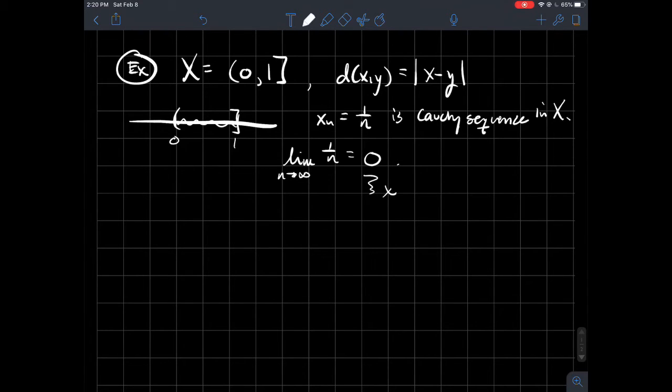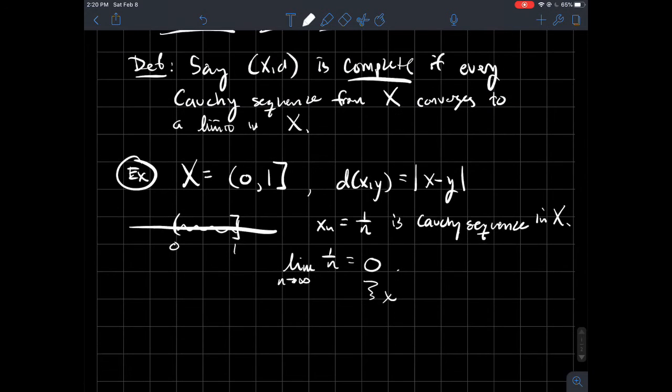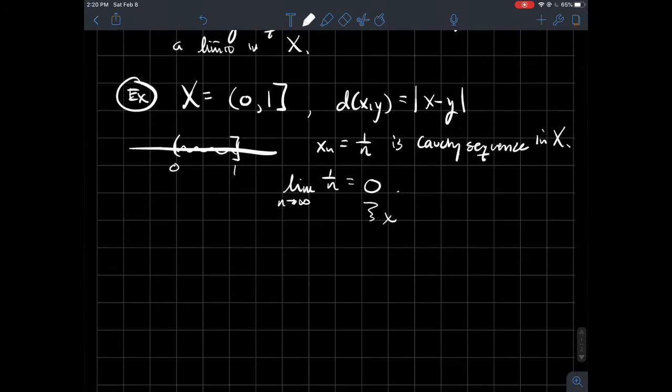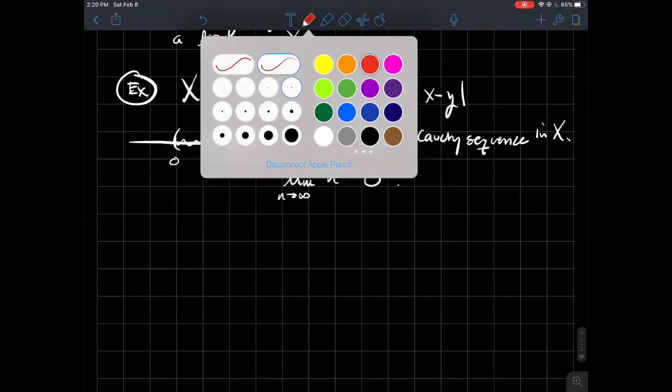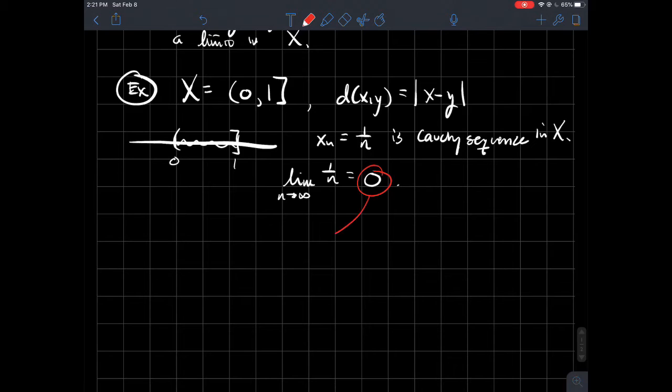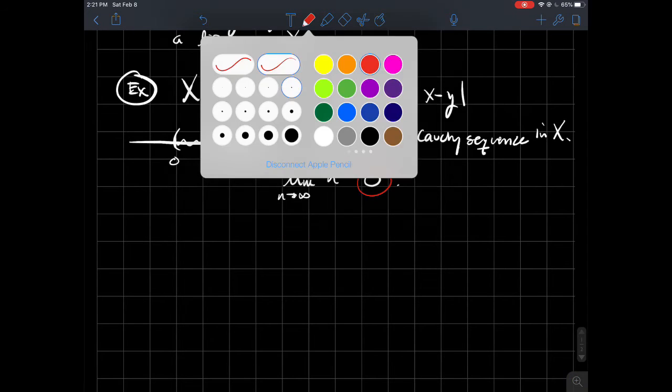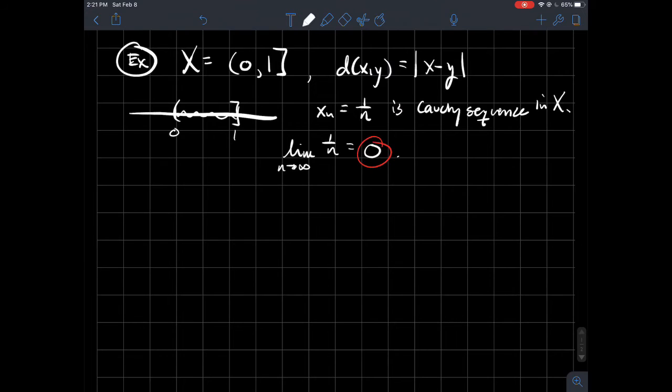So this is like what I'm calling x converges to some limit. So the limit is zero. And so what's going on here? Well, this limit is not an element of my set. So what just happened? We should say the limit of this Cauchy sequence is not in X. Well, that's not good.